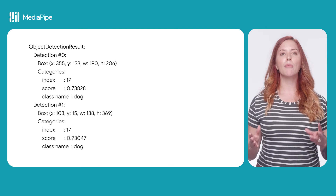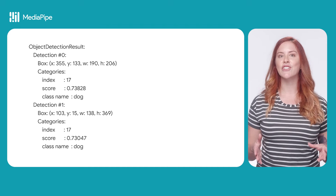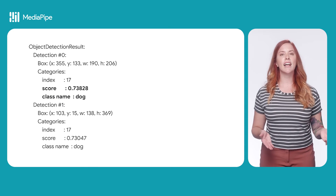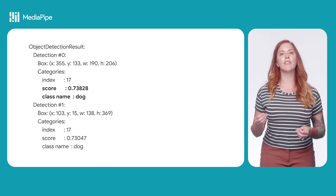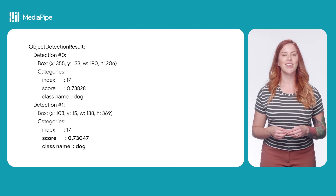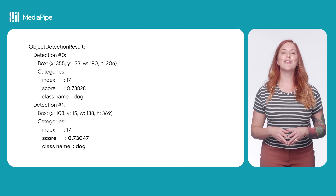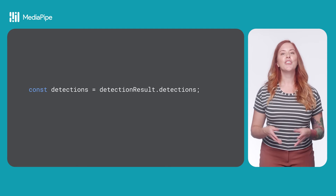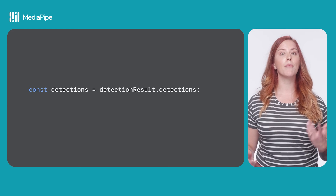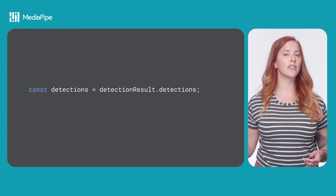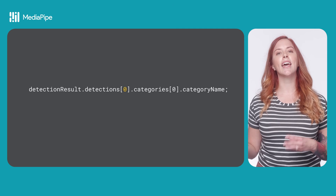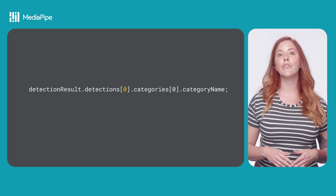The detect method returns an ObjectDetectorResult object. There are a series of detections in order of how confident the model is that the detected object belongs to the given category. In this example, the first detection has a class name of dog and a confidence score of 0.73828, and the next detection is also a dog with a confidence score of 0.73047 — so we can be reasonably sure there are two dogs in this image. You can access these results using detectionResult.detections, and to get the display name of the first result, use detectionResult.detections[0].categories[0].categoryName. You can iterate through results to handle multiple detections.